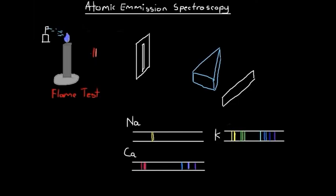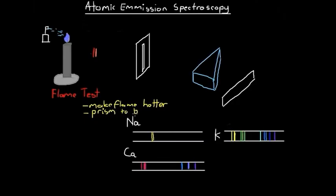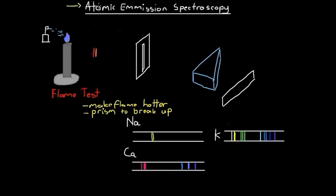Two ways we can improve this process: first, if we make the flame hotter, we'll be able to excite a larger range of elements and thus identify more elements. Second, we can use a prism to break up colors. The color of the flame is a mixture of all the different colors of light emitted by the atom as it de-excites, but if we use a prism to break it up, we can see the individual wavelengths being emitted. By making these two improvements, we arrive at atomic emission spectroscopy.